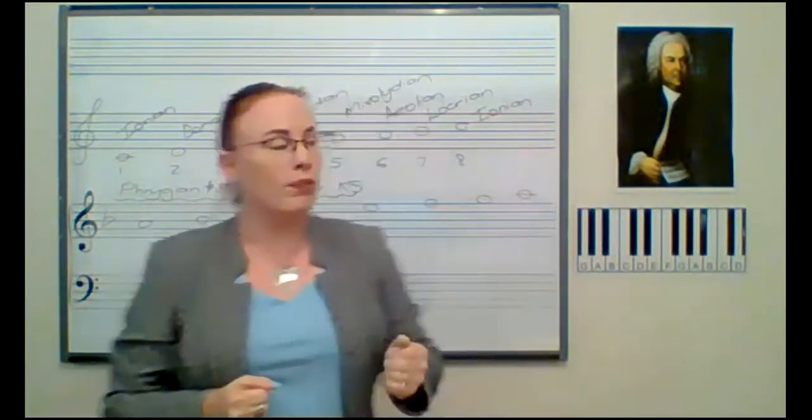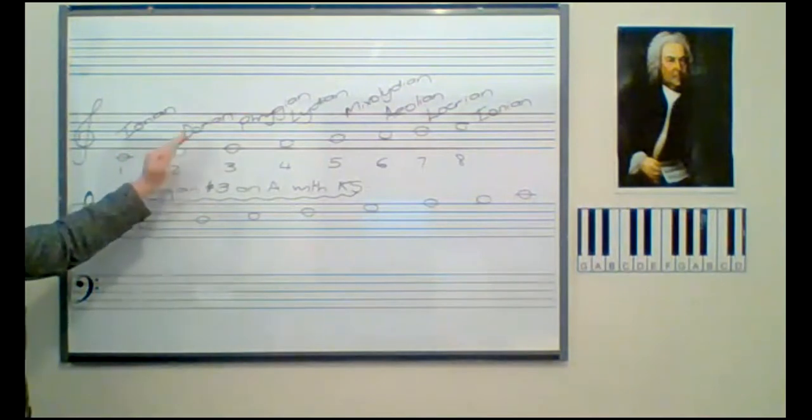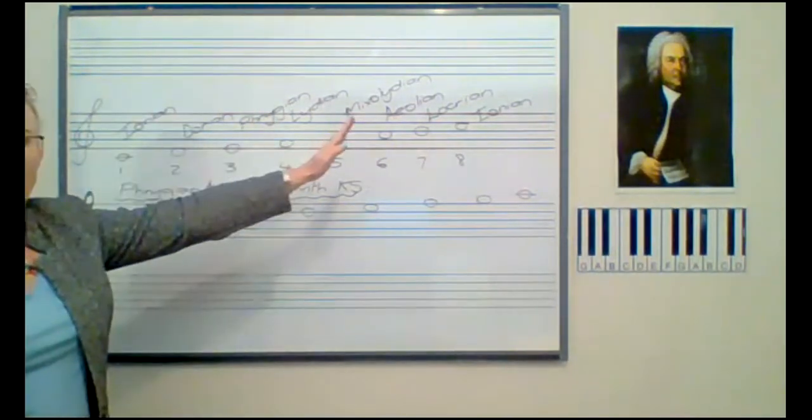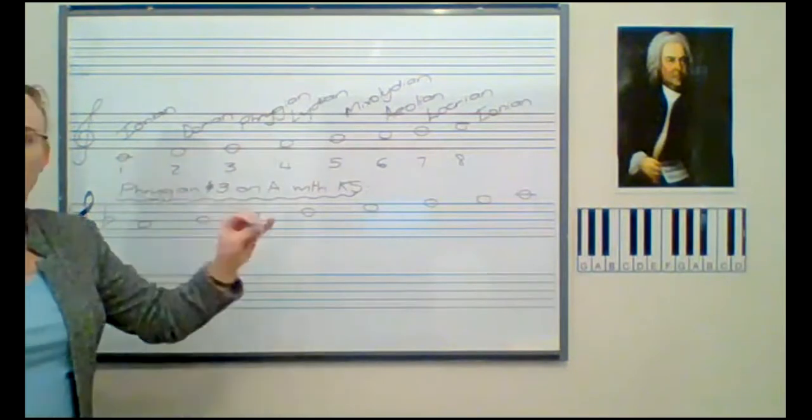On the board you'll see I wrote C major, and then I also indicated the various modes. So whenever you go from the tonic to the tonic in whatever scale, it's known as the Ionian mode.